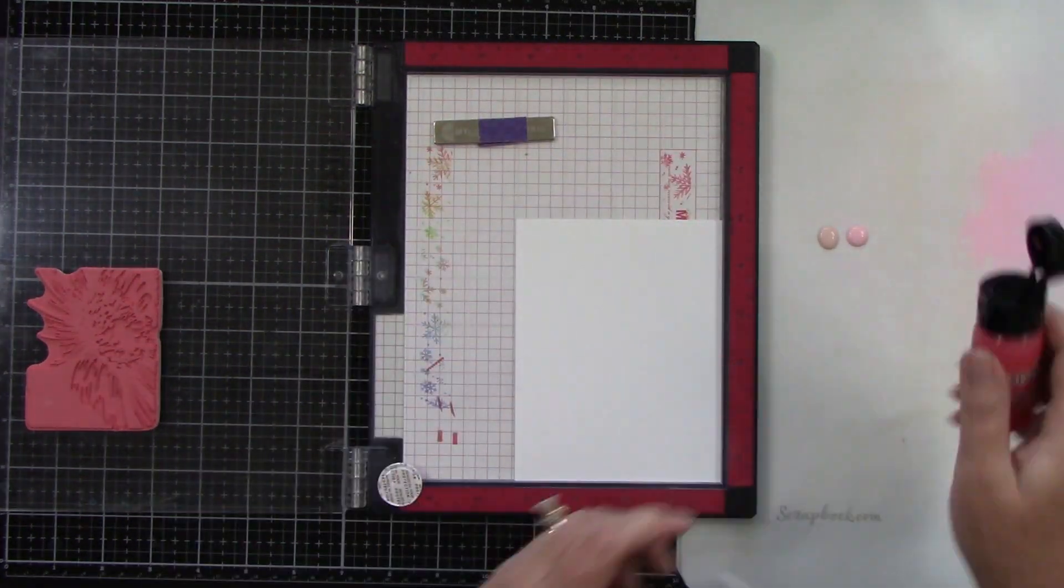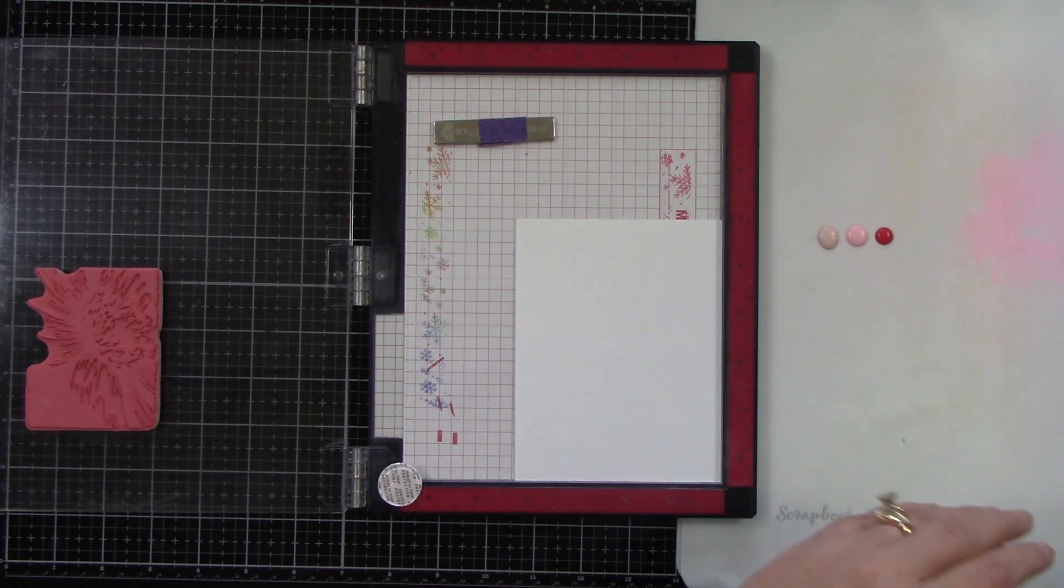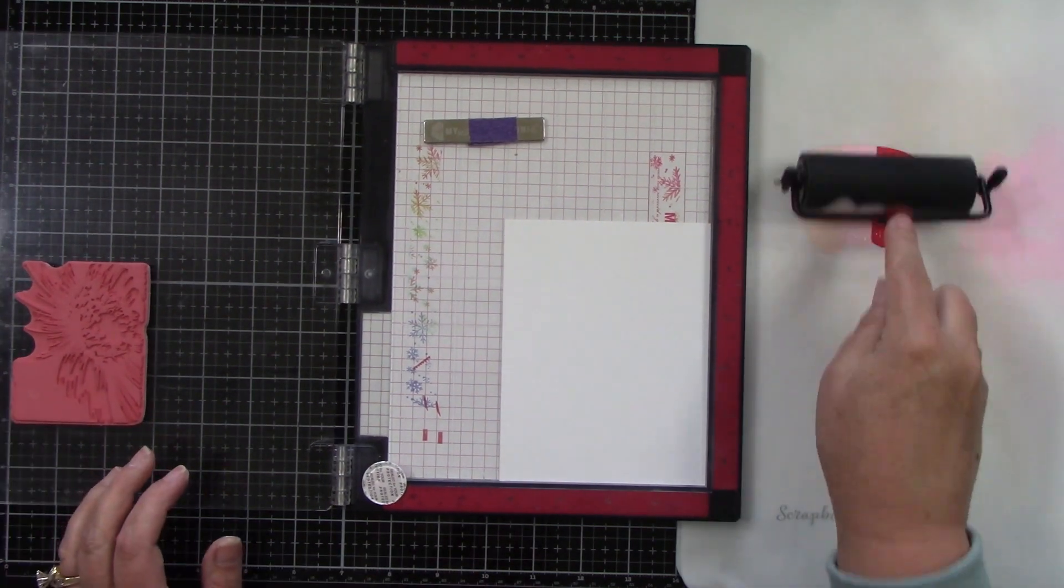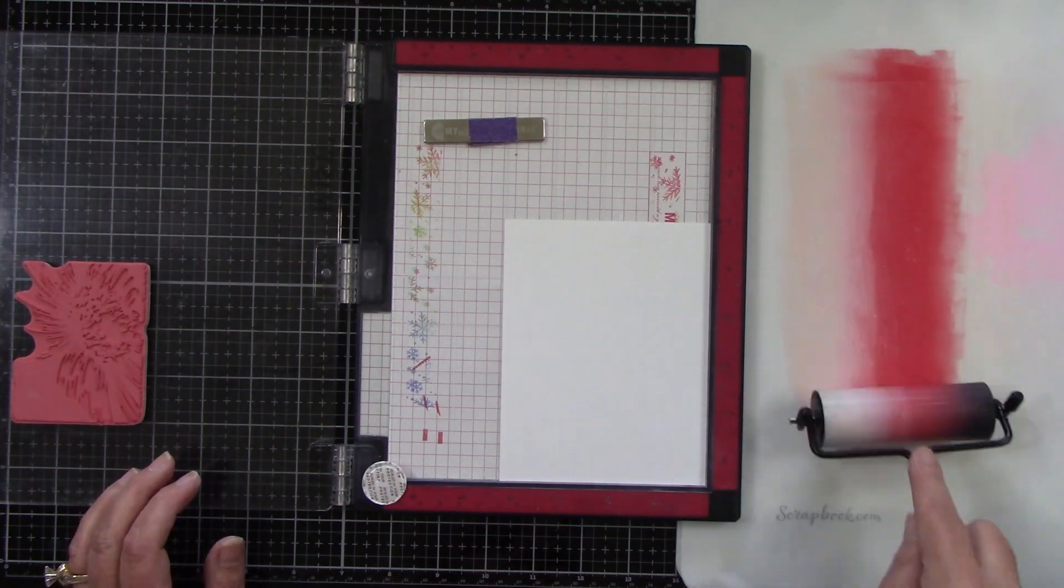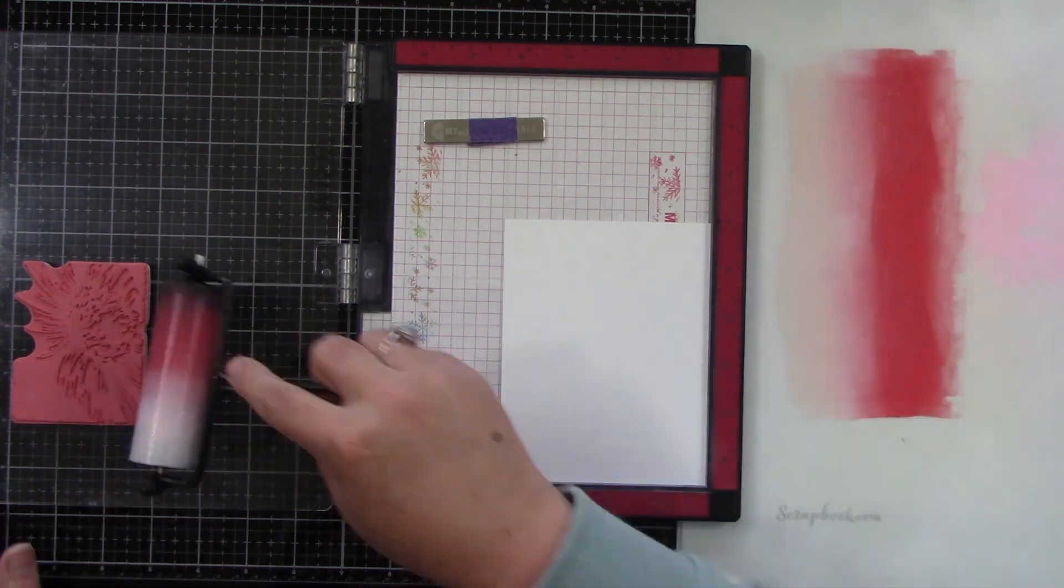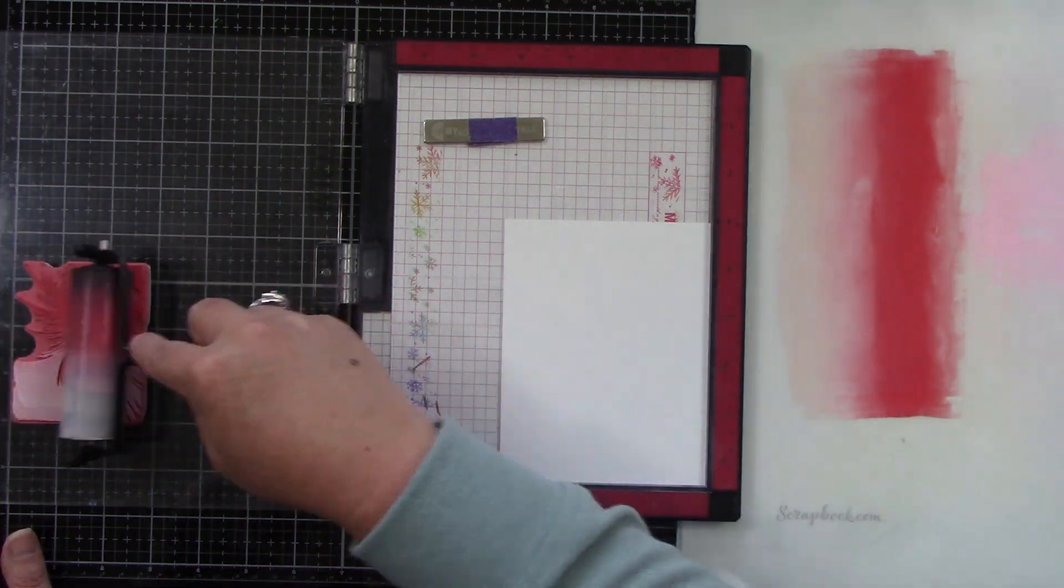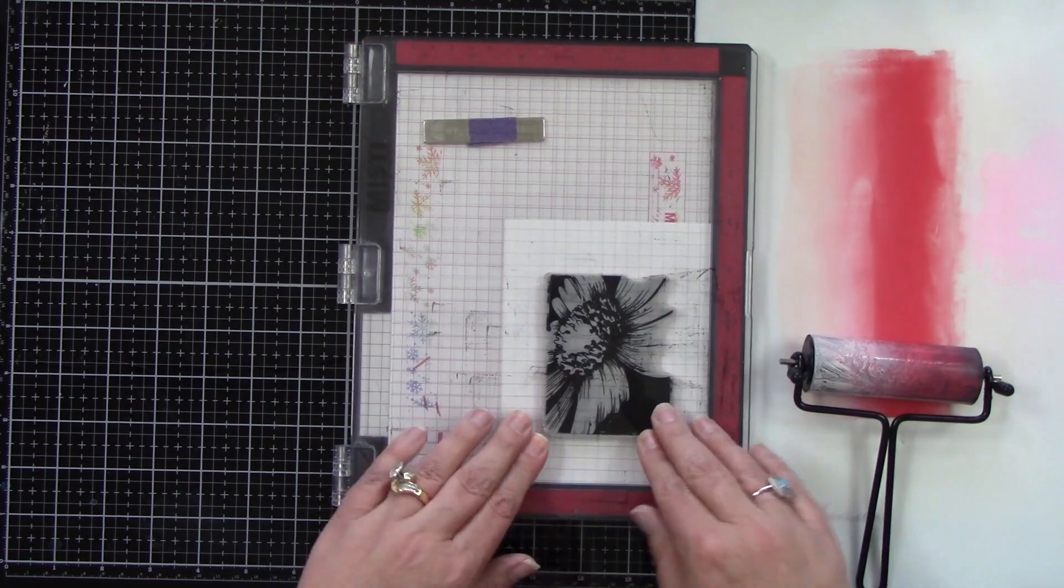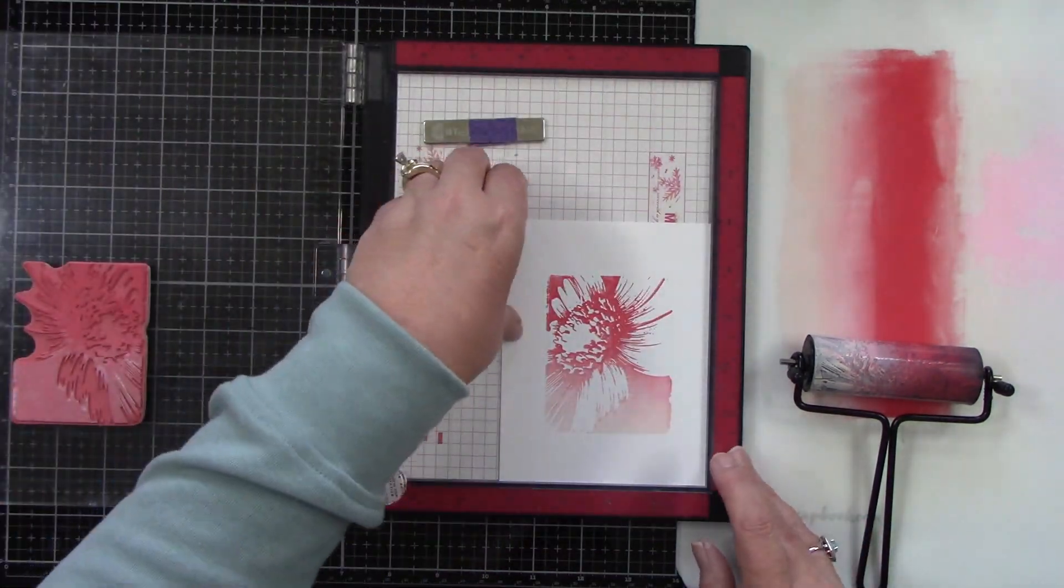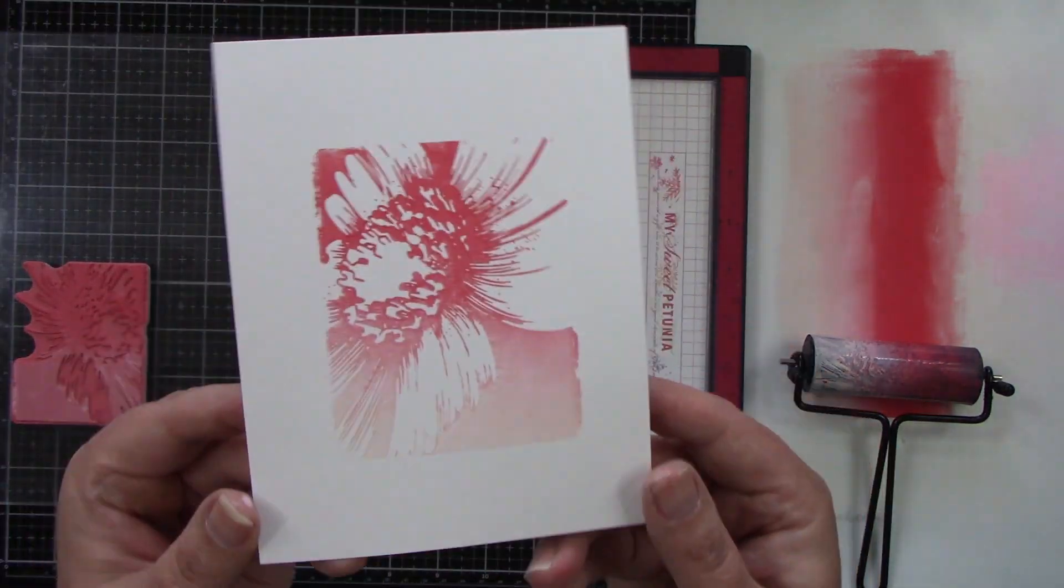The next colors are Spun Sugar, Tattered Rose, and Festive Berries. Again, I am doing an ombre effect, but I'm also keeping everything monochromatic. But you could imagine the color combinations you can do with all these paints. So I rolled it on here and you'll see that this one was just fine.